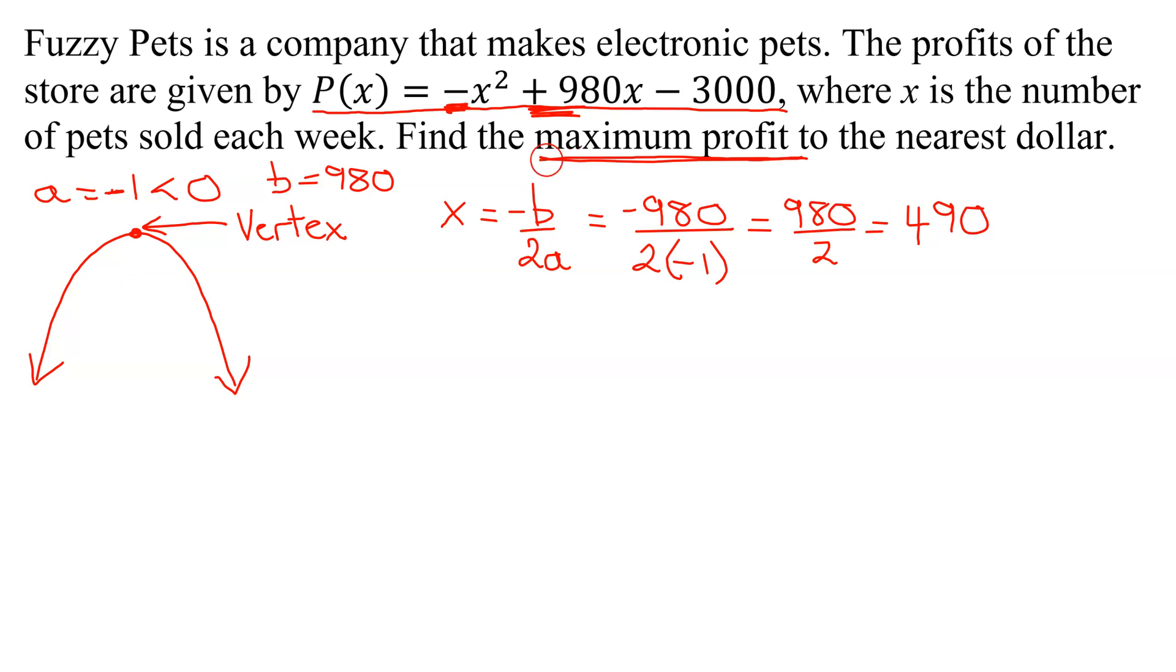So now to find our maximum profit, all we have to do is go in and for every X in the function put 490. So P of 490 equals, going up here, the opposite of X squared plus 980 times X, which is 490, minus 3000.